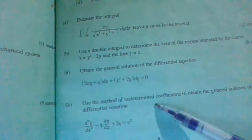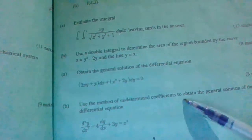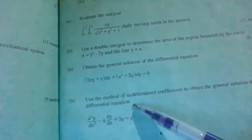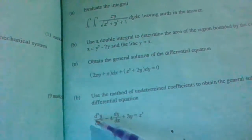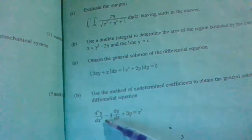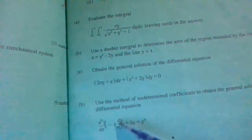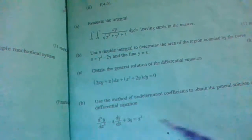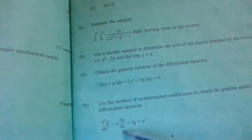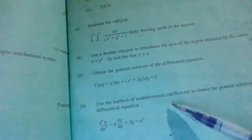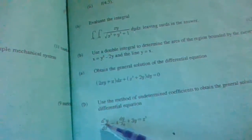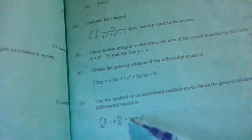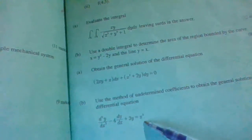Use the method of undetermined coefficients to obtain the general solution of the differential equation: d²y/dx² minus 4 dy/dx plus 3y equals x squared.